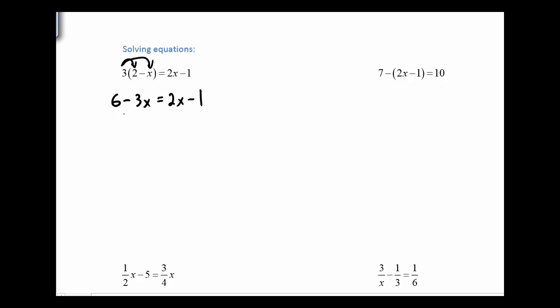From here, I want to get variables on one side and numbers on the other. I'm going to add 3x to both sides. The 3x's cancel out and I'm left with 6 on the left side. And over here, 2x plus 3x gives me 5x.